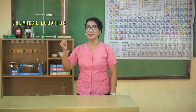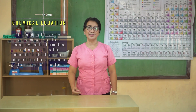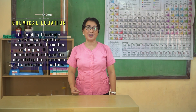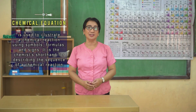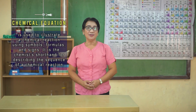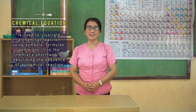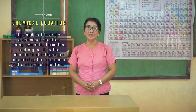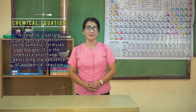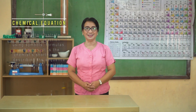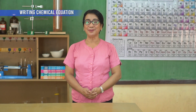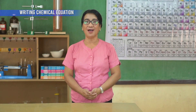A chemical equation is used to illustrate a chemical reaction using symbols, formulas, and signs. It is the chemist's shorthand for describing the sequence of a chemical reaction. When we write a chemical equation, we take note of the following.